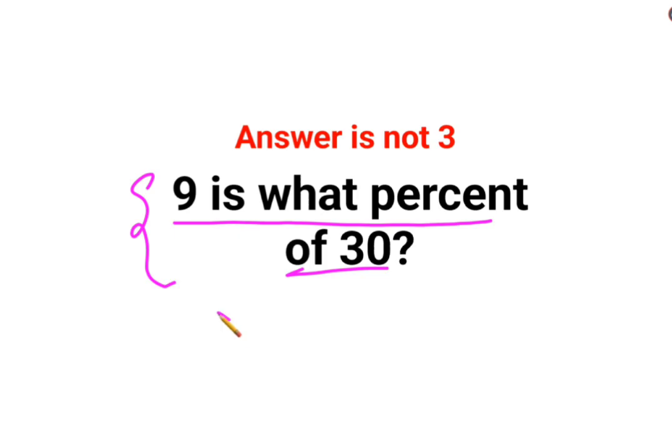Whenever you have this question, you write it as it is. 9 is means equal to, what percent means x, of means multiplication by 30. So we write it as x percent of 30.